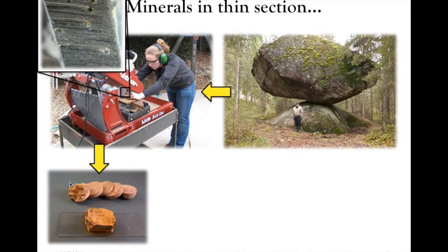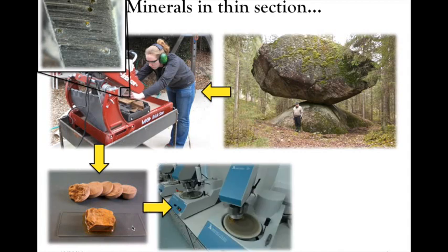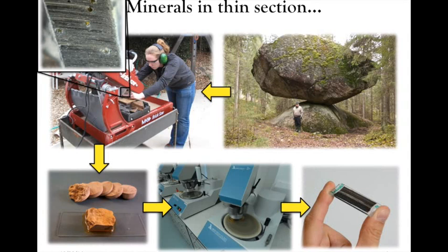Eventually we get little chunks that are centimeters in dimension, and we glue our pieces onto a glass slide — this is known as a billet. That gets mounted onto polishing devices, and the vast majority of that material gets ground away, leaving just a very thin specimen. What's left behind after all that cutting and polishing is only about 30 microns in thickness. If those are non-opaque minerals, light can pass through them and we can transmit light and look at them with the light microscope.